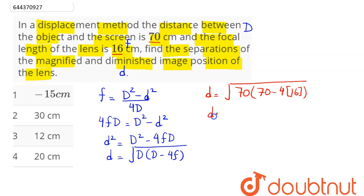out to be d = √(70 × (70 - 64)) = √(70 × 6) = √420 ≈ 20.5 centimeters.